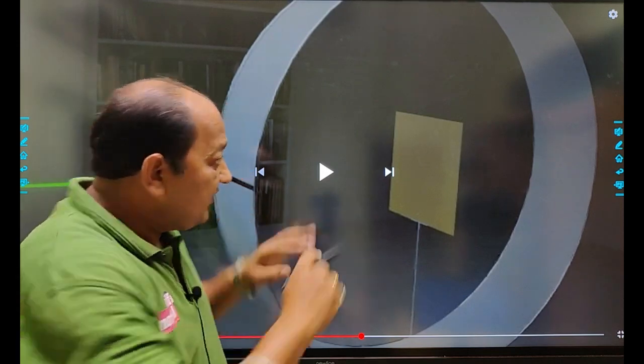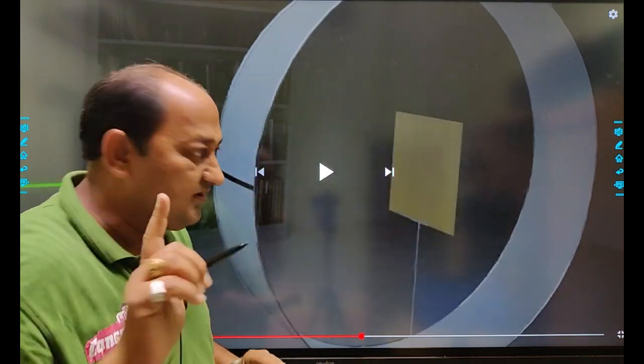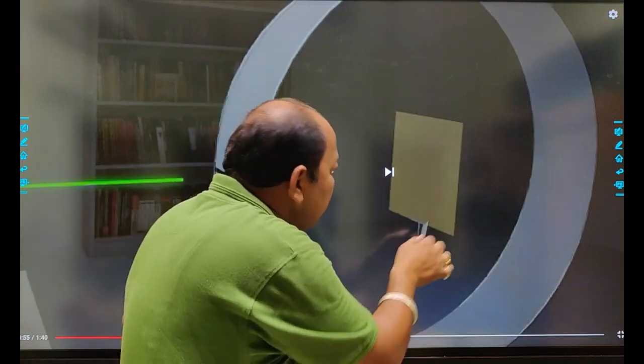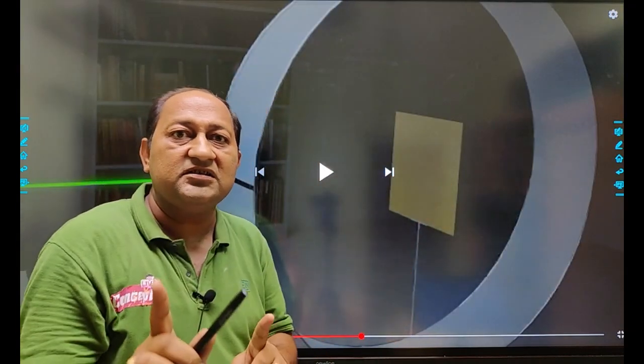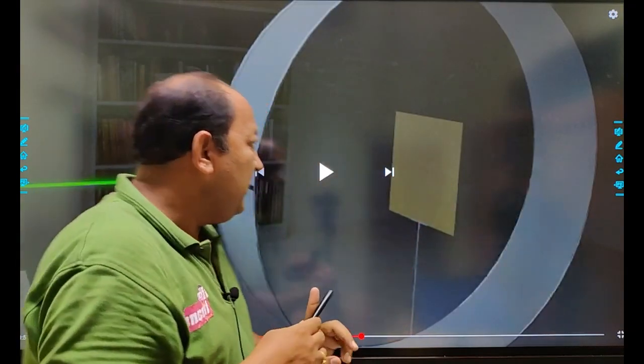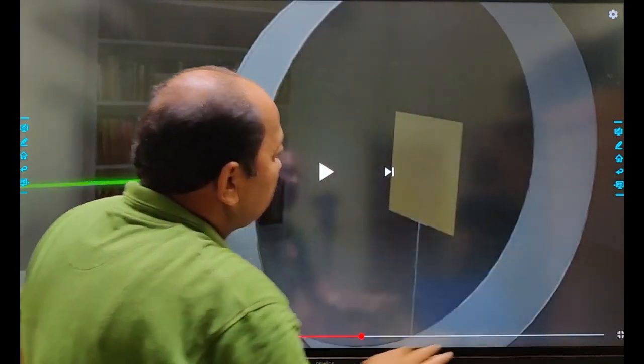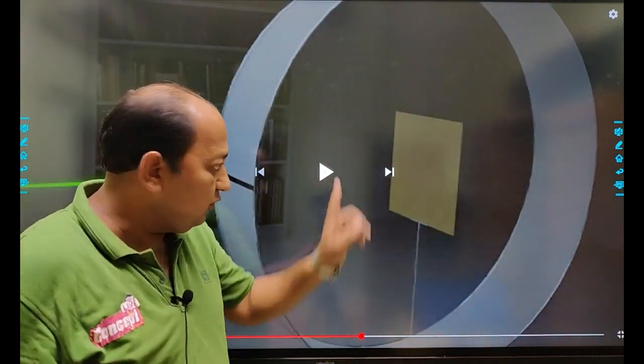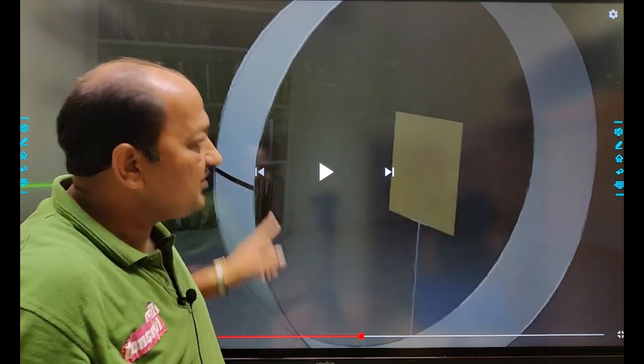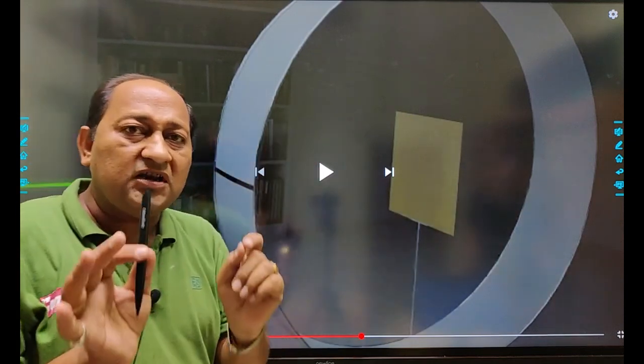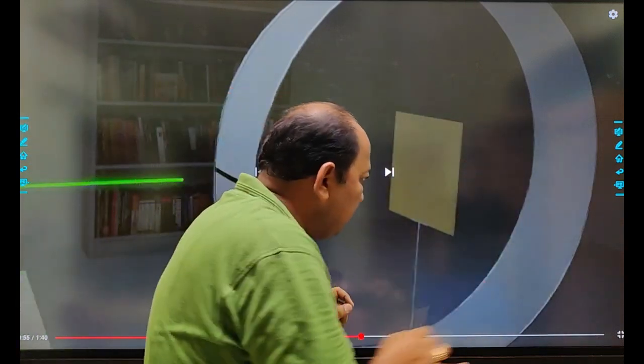This section consists of a thin gold foil. It is surrounded by a circular screen. The gold foil consists of atoms.